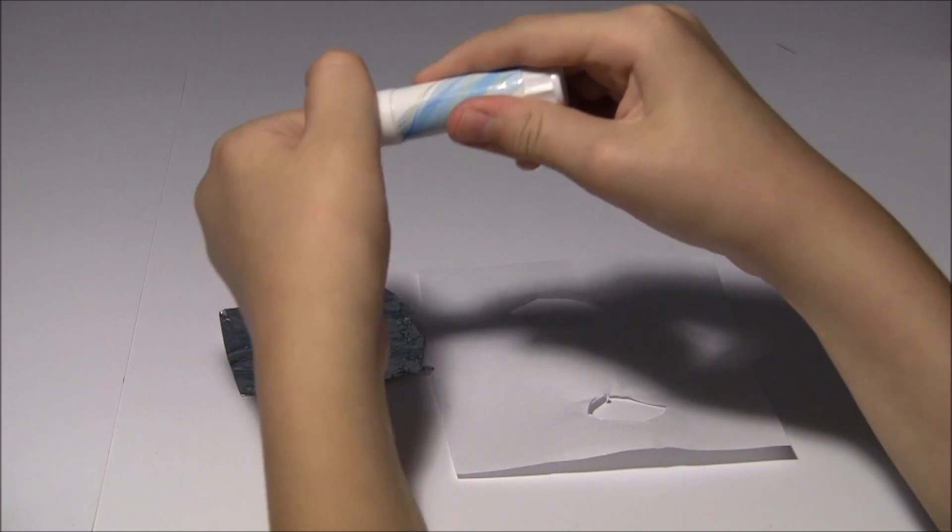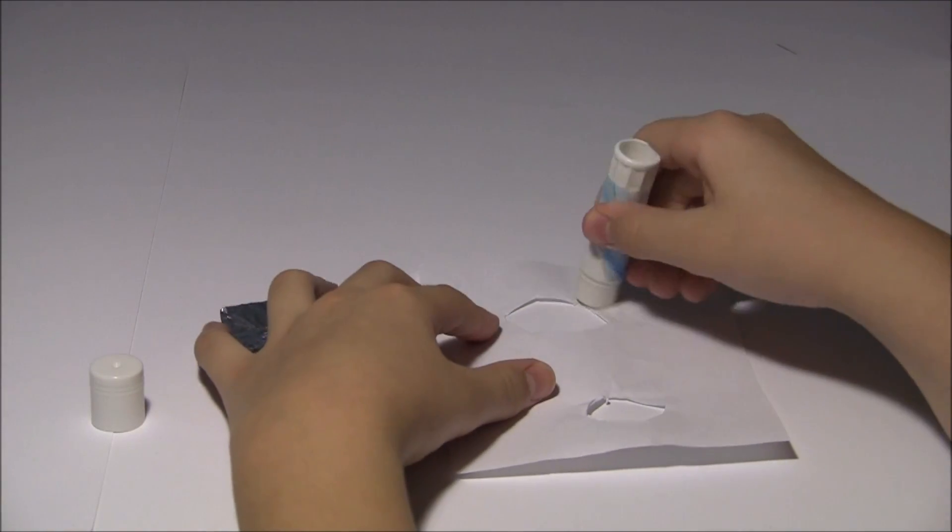After cutting two holes in the paper, glue the aluminum foil to each side of the holes.